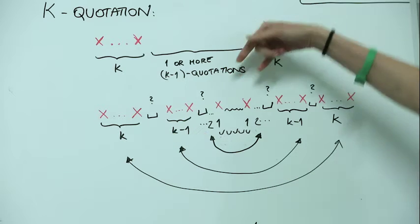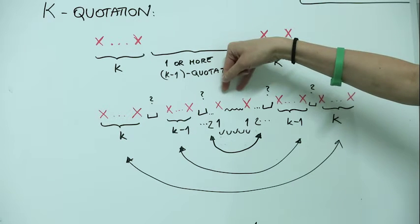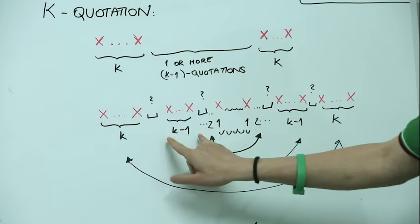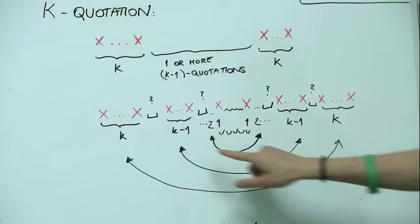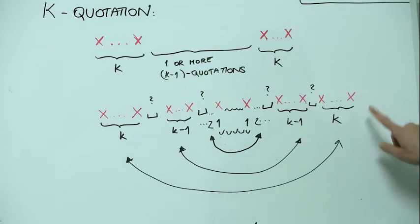this k-quotation may have its ending somewhere here, we can always take this k-1 as its pair. So we can pair this k with this k,